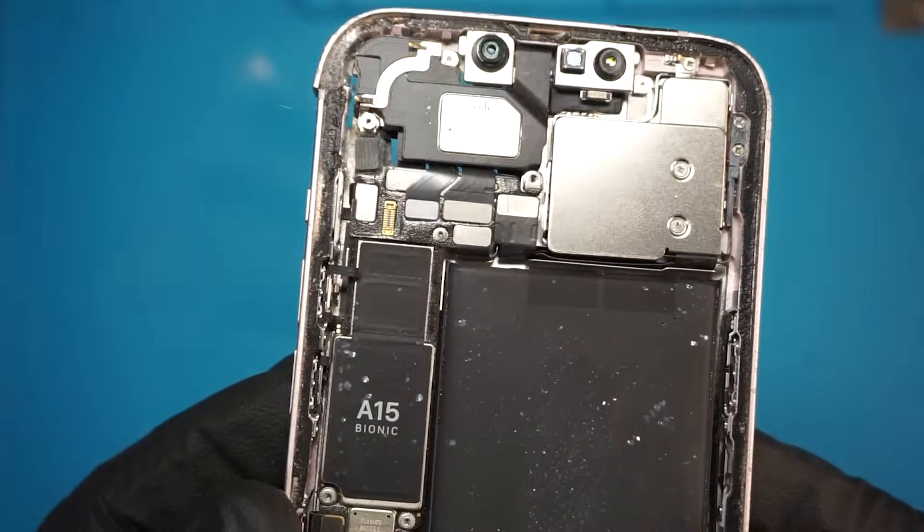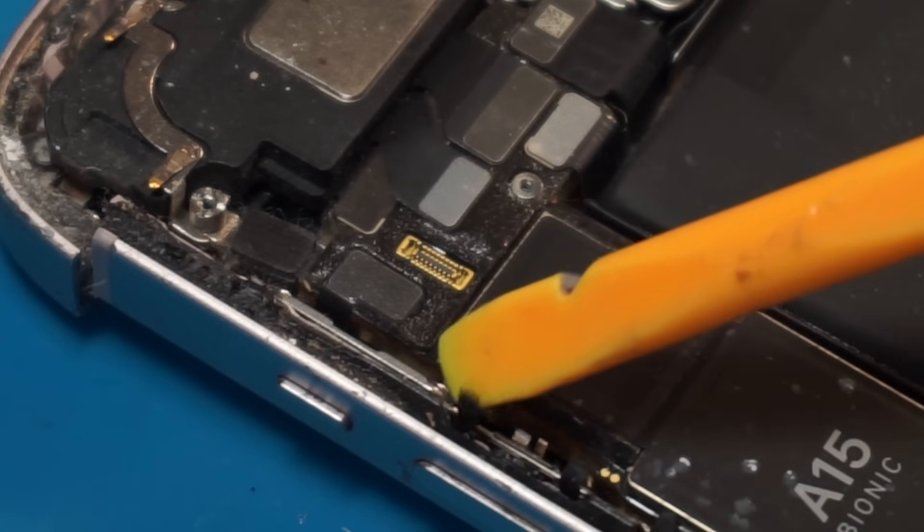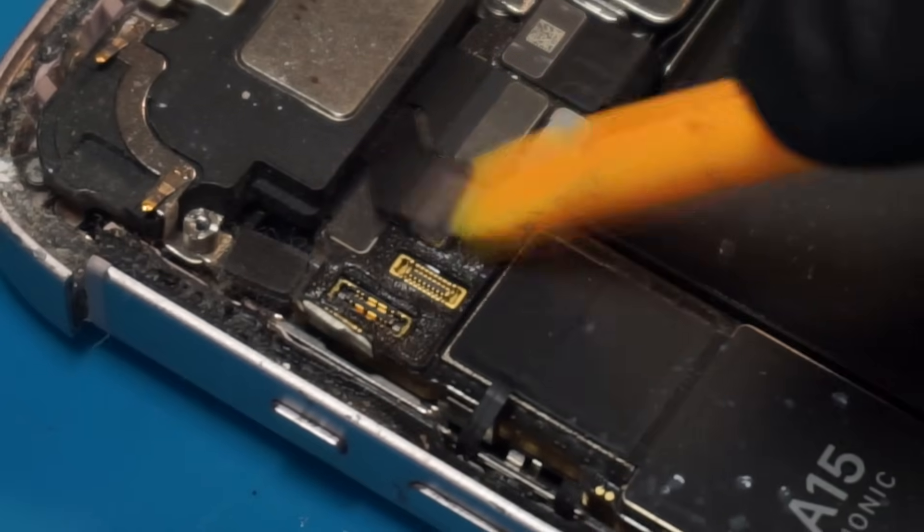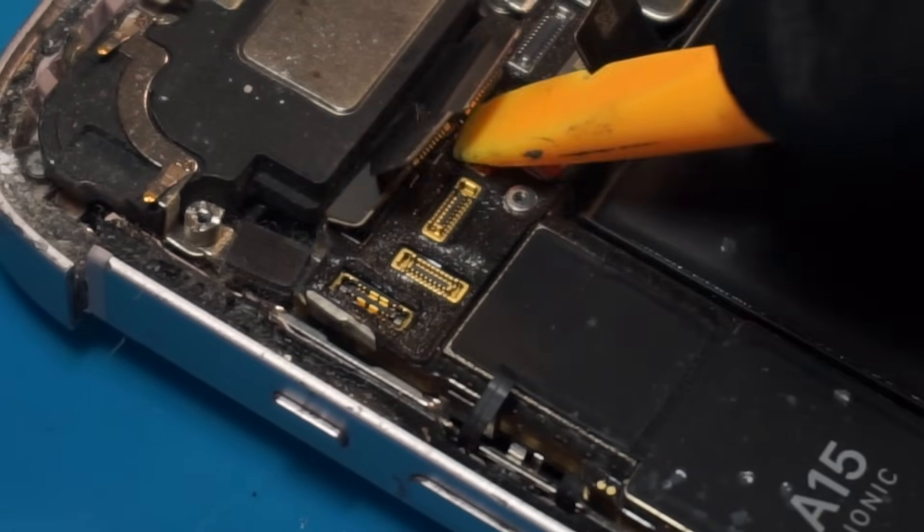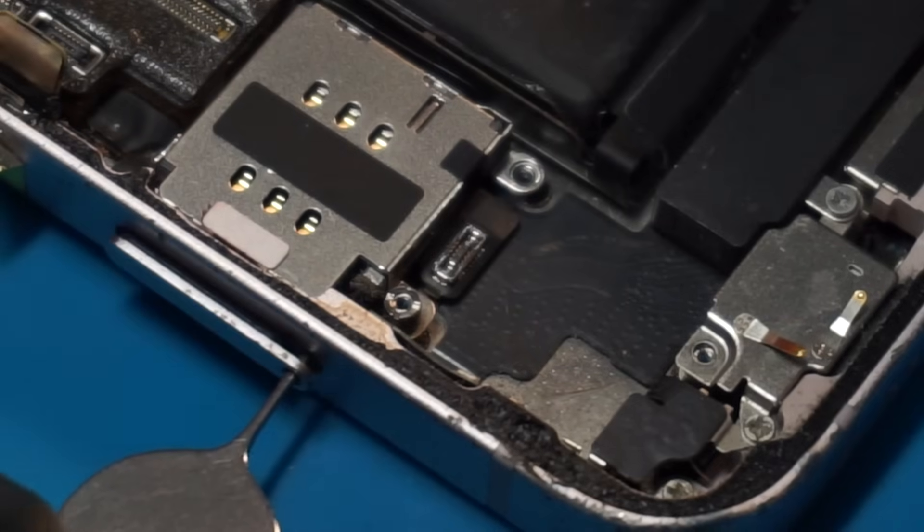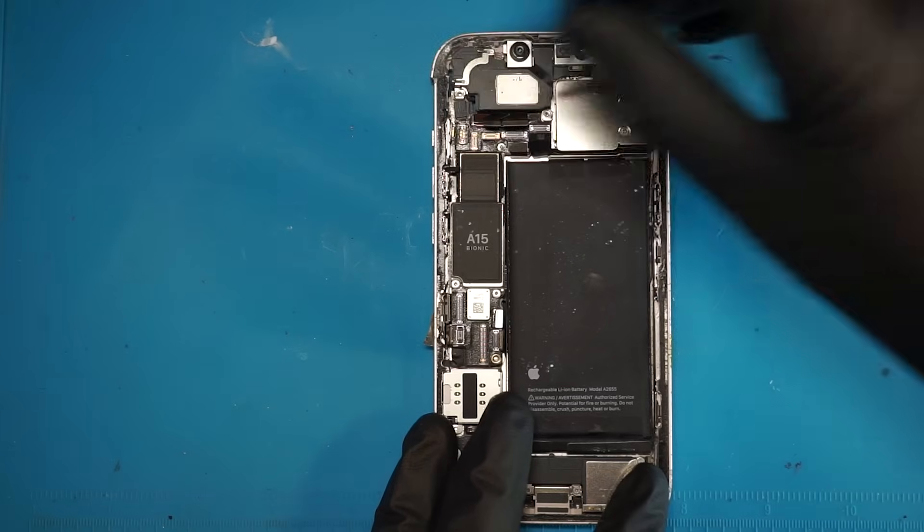On first glance things looking okay. Let's start by freeing the logic board. This flex is broken. Let's remove more connectors like little Legos. The Taptic engine is what makes the phone vibrate. Remove the SIM card tray. Then we can remove six more screws.